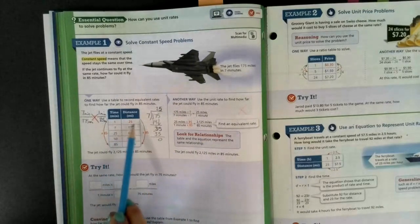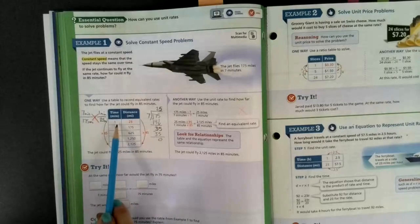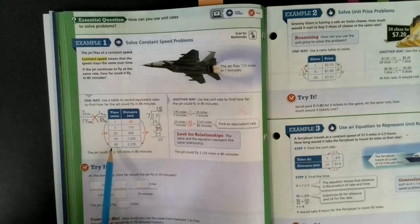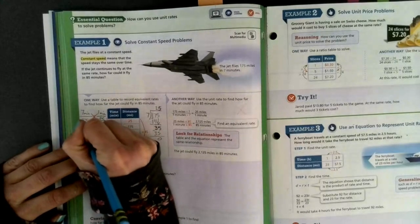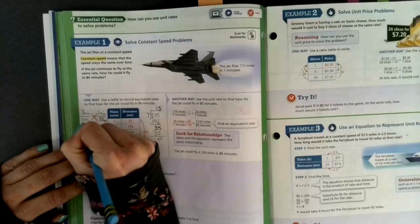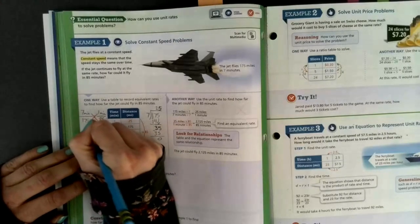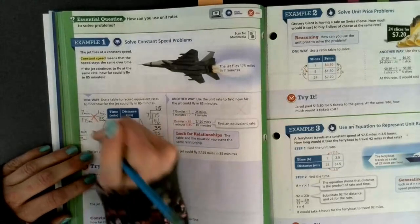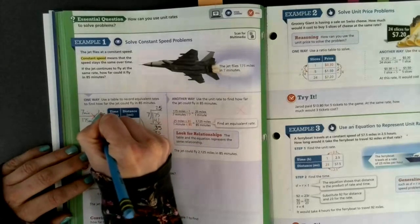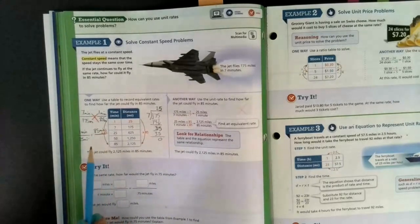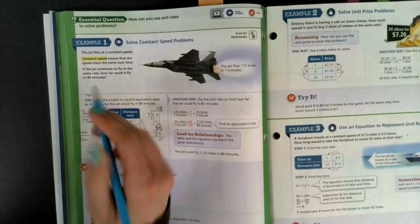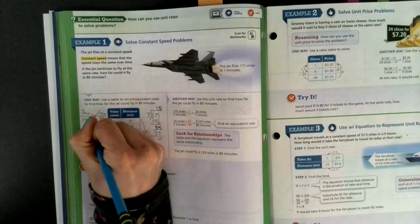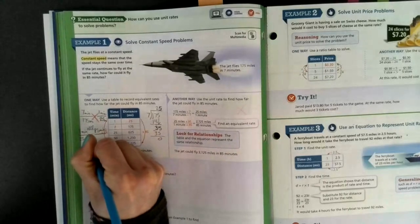All right, let's keep going. Now that I have my unit rate per one minute, I can use that to help me solve how far it would go in 85 minutes. So here I'm going to start with my one minute, 25 miles. And then I'm going to set it equal to what I'm trying to find. I'm trying to find 85 minutes.